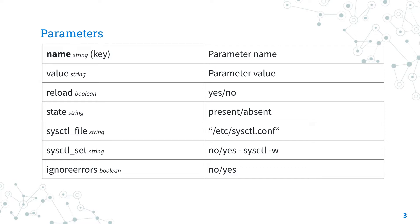The parameter 'reload', which defaults to yes, reloads the configuration file if any changes occur. The parameter 'state' sets the present or absent state of the parameter in the sysctl file.